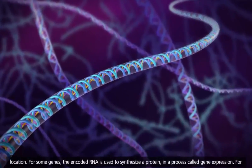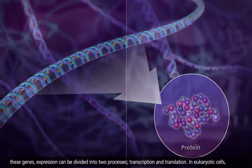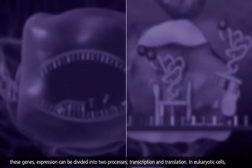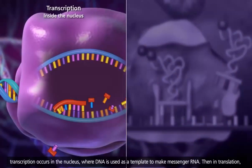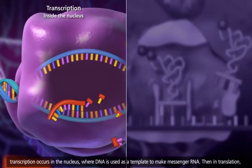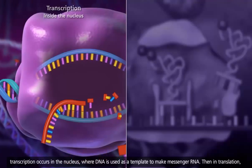For some genes, the encoded RNA is used to synthesize a protein in a process called gene expression. For these genes, expression can be divided into two processes, transcription and translation. In eukaryotic cells, transcription occurs in the nucleus, where DNA is used as a template to make messenger RNA.